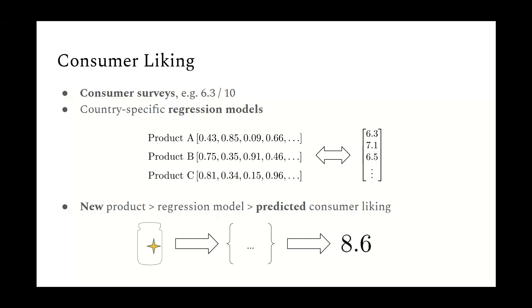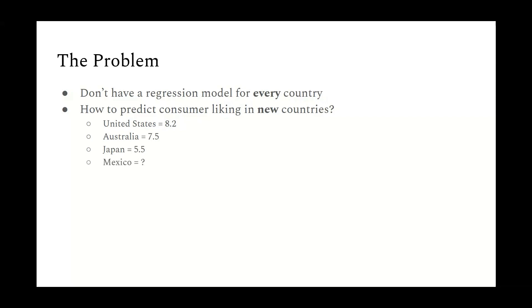So once you have your regression model, then whenever you have a new product, you can put it into the model, and then out comes the predicted consumer-liking score, as you can see in the bottom here. As I said, consumer surveys are very expensive, and if you're selling your mayonnaise all around the world, like Unilever do, you can't realistically carry out these surveys in every country. So the situation is that Unilever have surveys, but only for maybe a dozen countries. So how can we start to connect our models, and how can we leverage the information that we already have to make predictions in new countries?